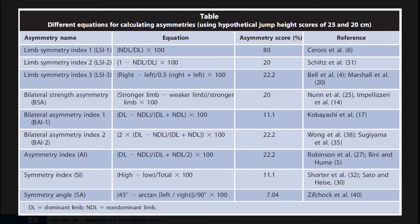Knowing all that, if we stick with that third column — the asymmetry score percentages — the highest value we've got is 22.2% and the lowest is 7.04%. We've also got four different potential outcomes there, regardless of what data gets put into the equations. That's a discrepancy of 15.16%, which is really large and quite a large margin for error.